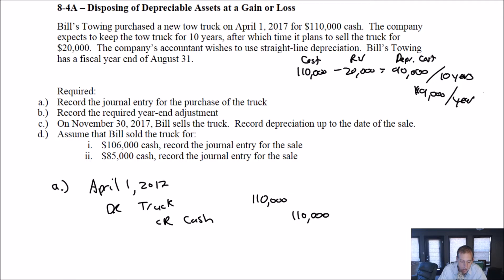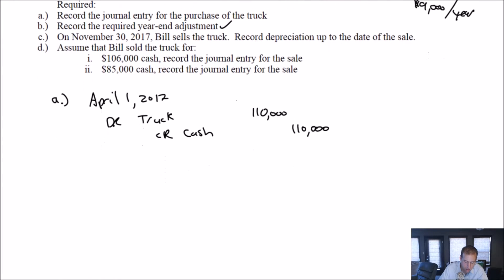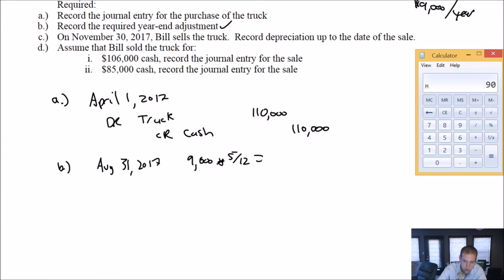Bill's towing has a fiscal year end of August 31st. The second part says record the required year-end adjustments. The adjustment to get us up to August 31st is how many months? April, May, June, July, August is five months. It was $9,000 in depreciation for a year. We're only interested in 5 twelfths of a year. 9,000 times 5 twelfths is $3,750.